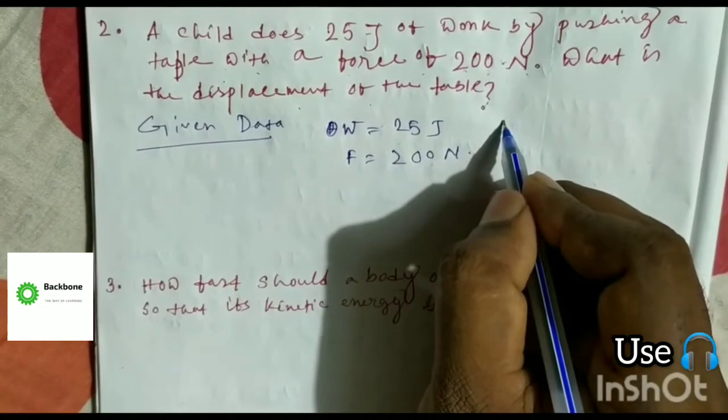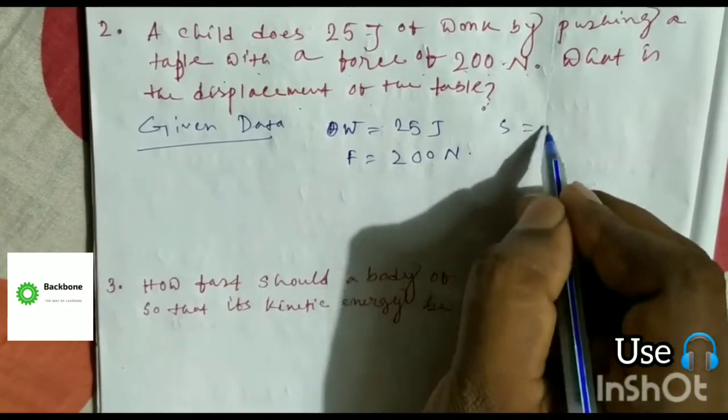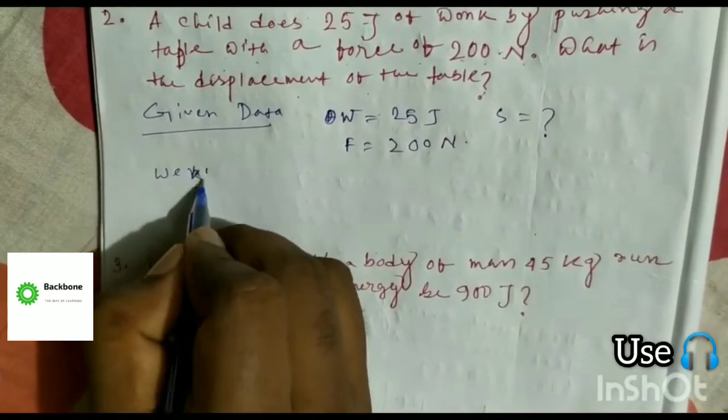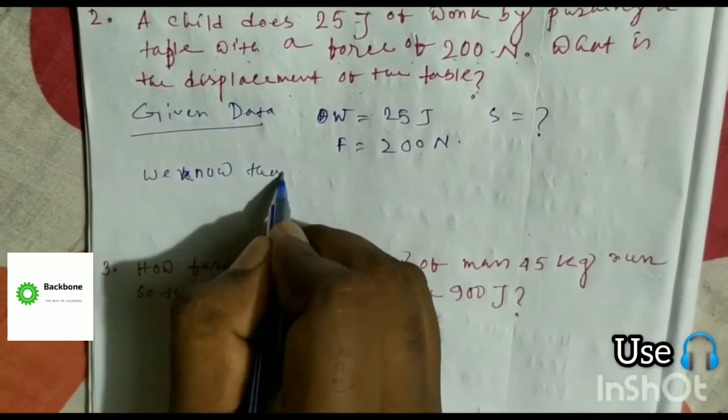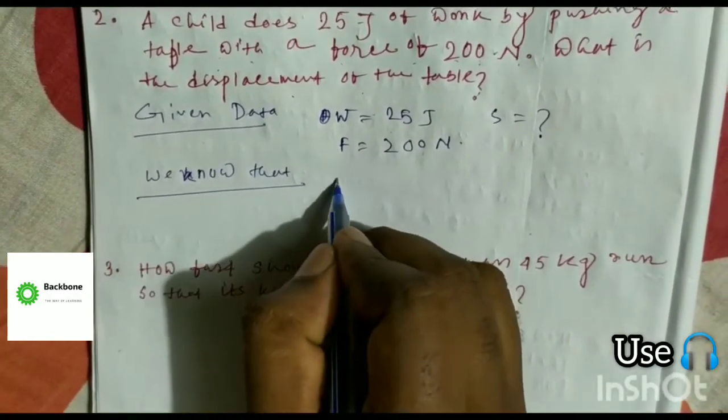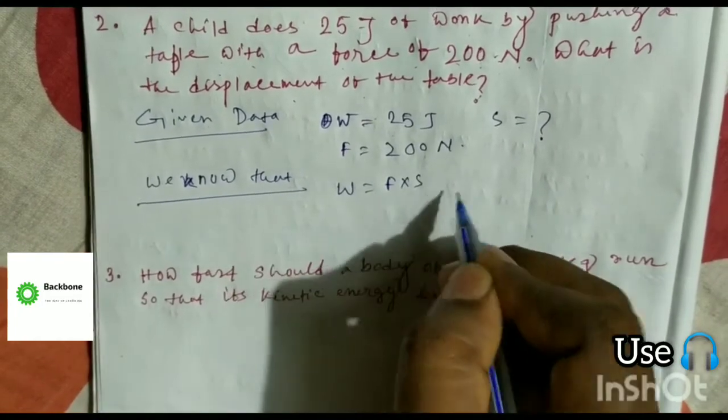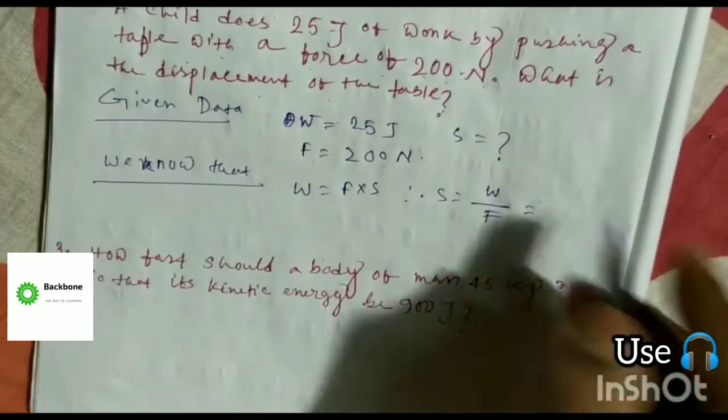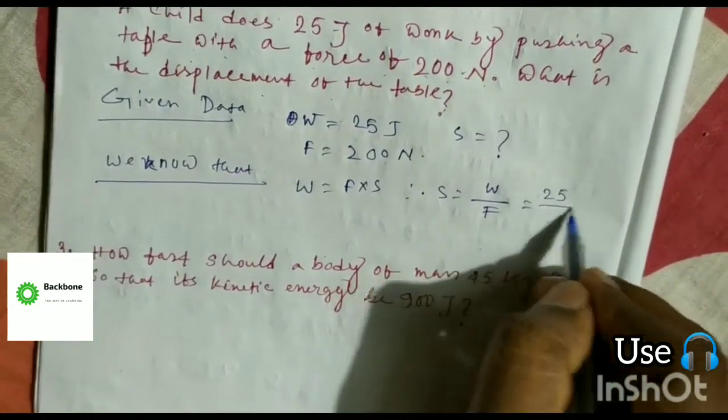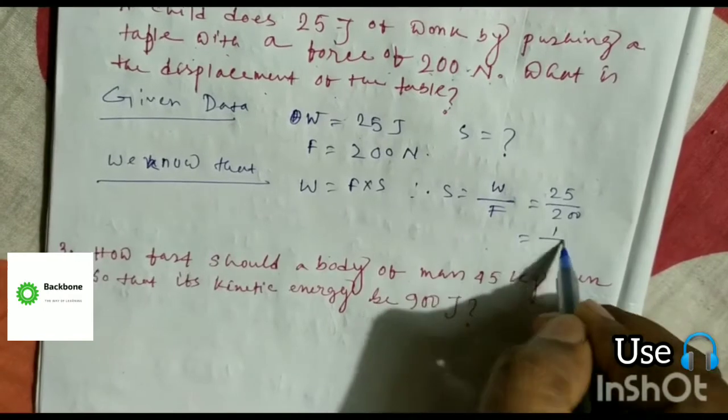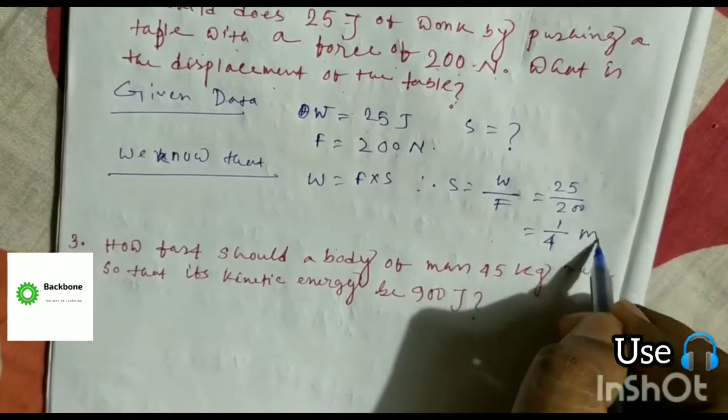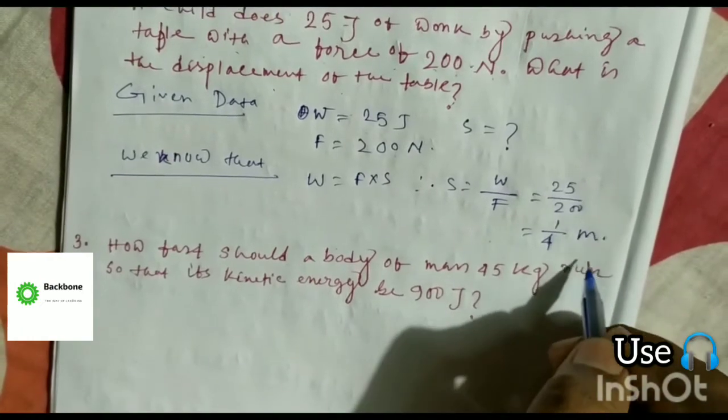And the question is S is equal to what? We know that W is equal to F into S. Therefore, S is equal to W by F. S equals 25 by 200 equals 0.125 meters. This is the answer.